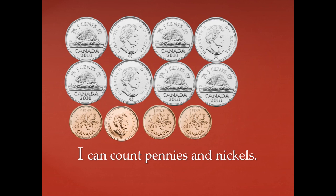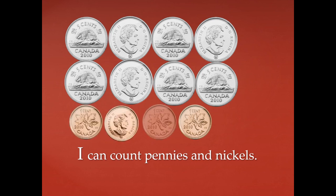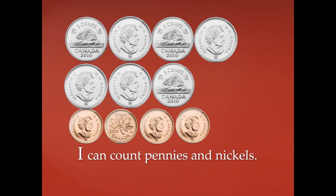Let's look here — we already have our nickels and our pennies divided and we're going to count them. Remember, when we count our nickels we count by five and when we count pennies we count by one. Count with me: 5, 10, 15, 20, 25, 30, 35, 40, 41, 42, 43, 44. We have 44 cents.